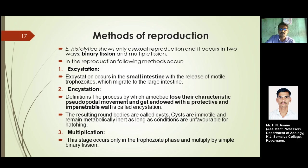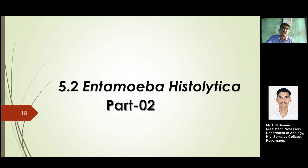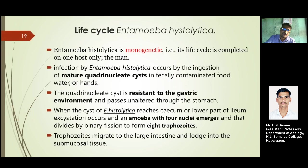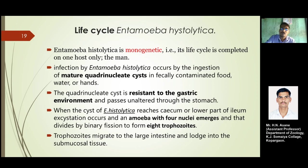Let's start with Entamoeba histolytica Part 2 — the life cycle. Entamoeba histolytica is monogenetic: mono meaning single, its life cycle is completed on one host only, and that host is man. Infection by Entamoeba histolytica occurs by the ingestion of a mature quadranucleated cyst. The trophozoite is the infective stage and the mature quadranucleated cyst is the mature form.